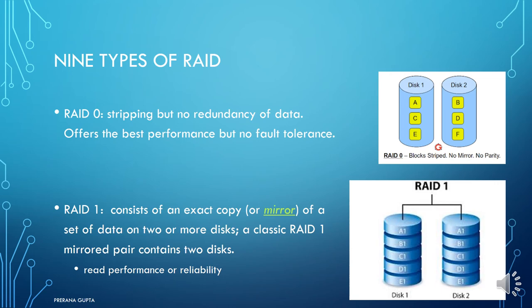There are nine types of RAID. RAID 0 has no redundancy — data is distributed across disks with block A on disk 1 and block B on disk 2, alternating. When disk 1 crashes, data from disk 2 is available. However, there is no fault tolerance in RAID 0. RAID 1 consists of an exact copy — mirroring. Whatever data is stored on disk 1, the same data is stored on disk 2. In case of disk 1 failure, disk 2 provides the same data. Read performance increases and data reliability improves.